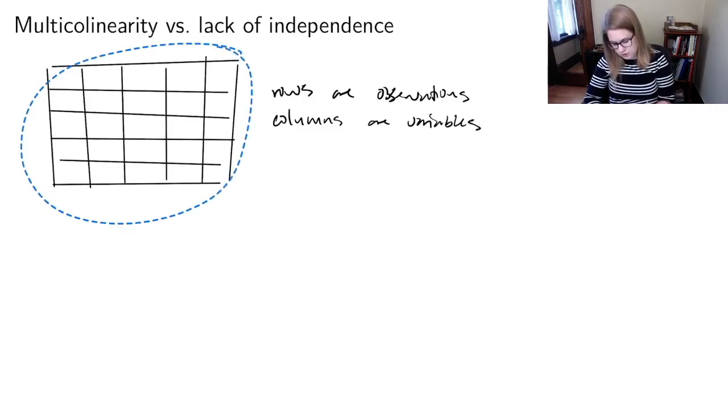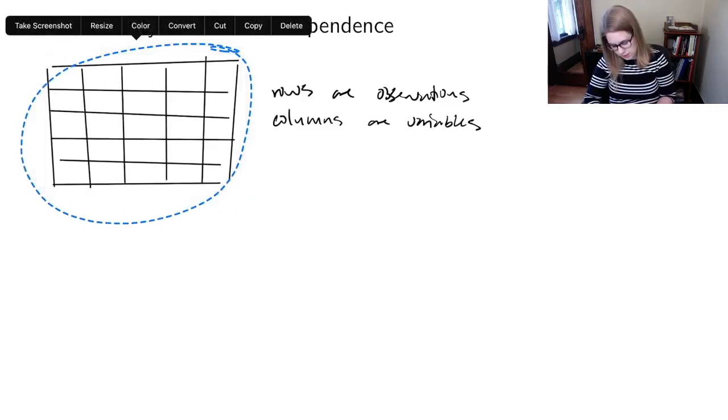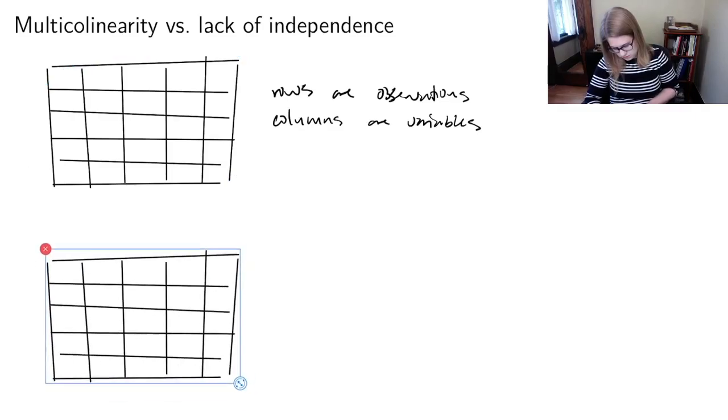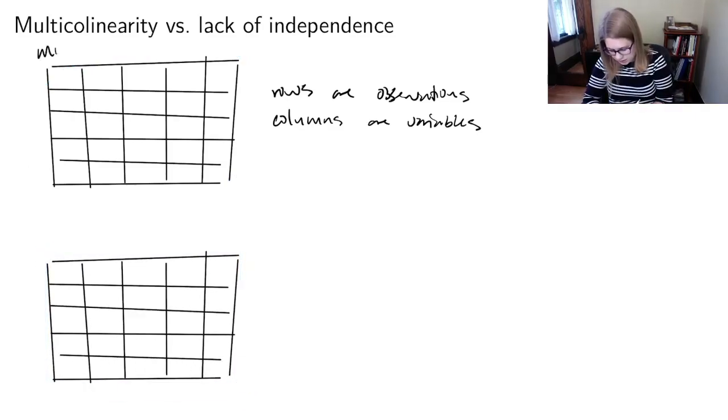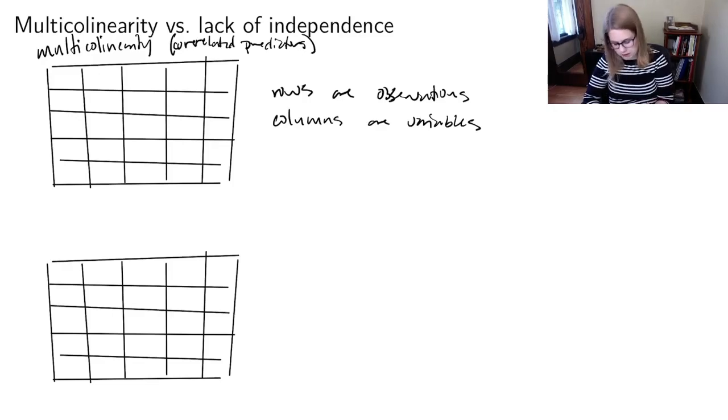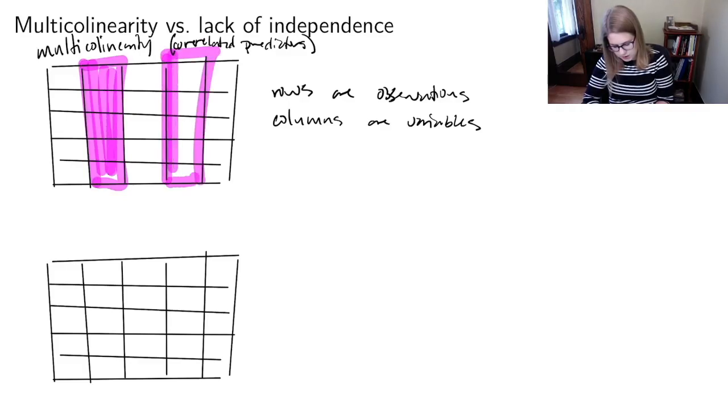Maybe I'll make two copies of this so that we can talk about it twice. If we have a multi-colinearity, or correlated predictors, that means there's a relationship between the columns. It means that this column might be correlated with this column. So that means that I shouldn't use both x1 and x2 in my model because they might be correlated with one another.